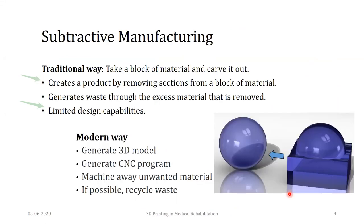So manufacturing could be either subtractive or additive. In the traditional subtractive way, whatever material it is — a piece of wood, plastic, or metal — we try to carve it. We remove whatever is unwanted, and in the process of removing unwanted material we generate a lot of waste. Finally we come up with the desirable finished part. This could be done traditionally or with modern machines like computer numerically controlled machines, where quality and accuracy are much higher. But the process more or less remains subtractive — we start with the material and remove what is unwanted.